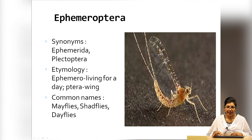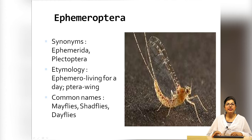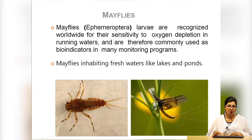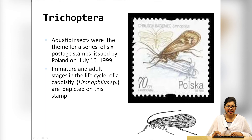Ephemeroptera includes mayflies, stoneflies, shed flies and day flies. Mayfly larvae are recognized worldwide for their sensitivity to oxygen depletion in running water. If mayflies are not present, it means there is a depletion in the oxygen level. Mayflies inhabit fresh waters like lakes and ponds.